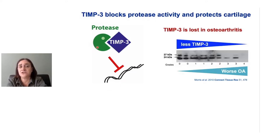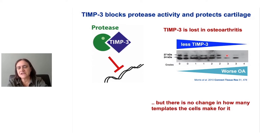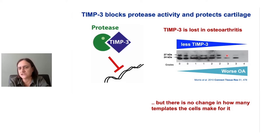Research published in 2010 showed that this TIM3 protein is lost in osteoarthritis. An image from this paper shows that as the disease gets worse, people have less TIM3 in their cartilage. Interestingly, we saw no difference in the amount of instructions the cells make for TIM3 in osteoarthritis. So that suggested to us that rather than how much TIM3 is made, in osteoarthritis there's a difference in how it's broken down or recycled. So I started looking at what causes TIM3 to be broken down — what process normally controls how much TIM3 we have in our cartilage, or in fact in any other tissue.